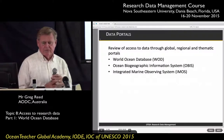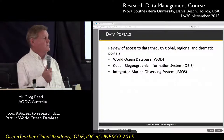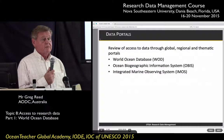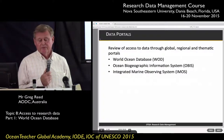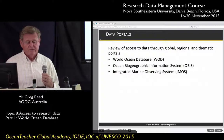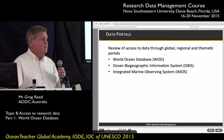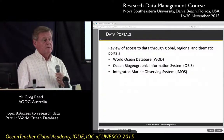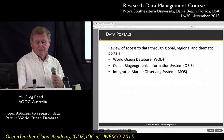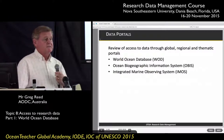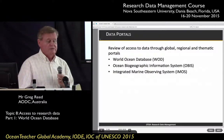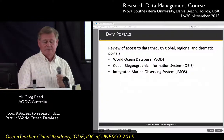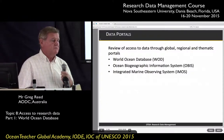We're going to look at three different portals: one is a global portal, one is a thematic portal, and one is a national portal. The World Ocean Database is a global repository for physical and chemical oceanographic data. OBIS, which is the Ocean Biogeographic Information System, is a repository for biogeographic data. And we'll look at the Integrated Marine Observing System, or IMOS, which is an Australian national portal.